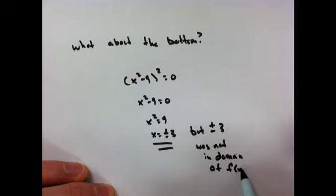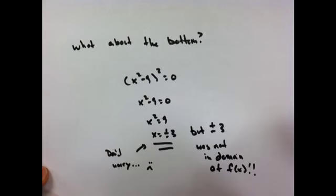If you get 3 and negative 3, realize that those two numbers are not in the domain of the original, so we don't have any answers. Thank you.